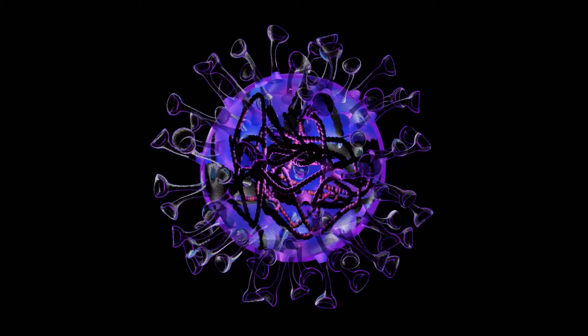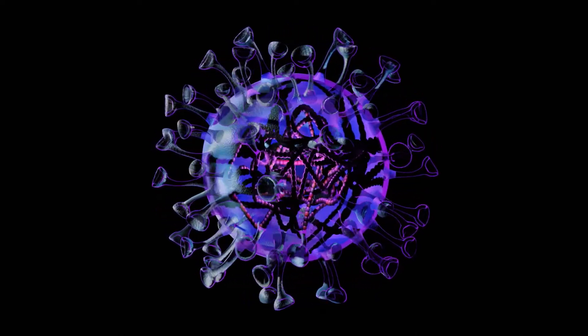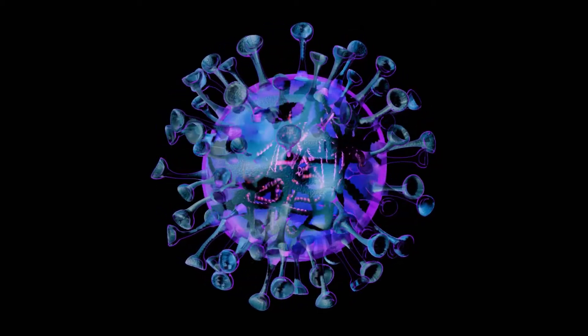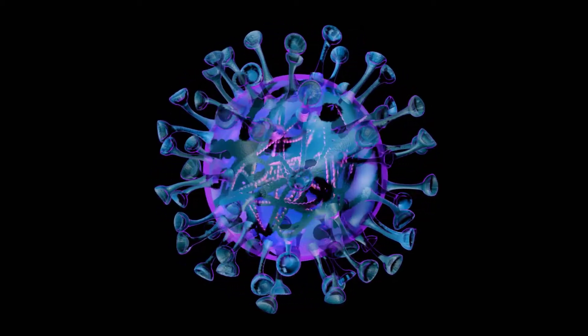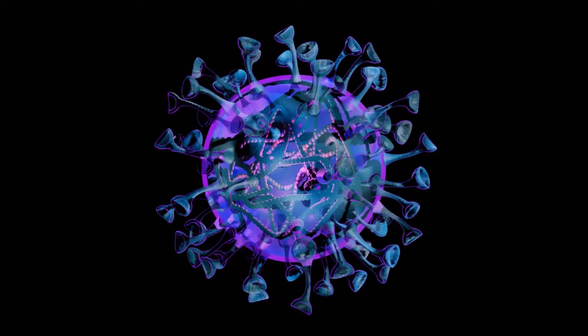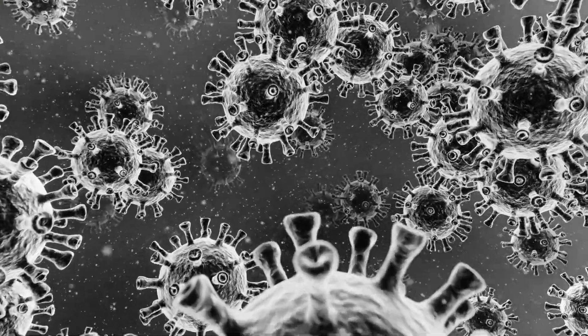Each variant has mutations throughout the virus, and specifically in the region of the virus spike protein that it uses to attach to and enter cells. Mutations in this spike protein region could make it less recognizable to T cells and neutralizing antibodies, which are produced by the immune system's B cells following infection or vaccination.